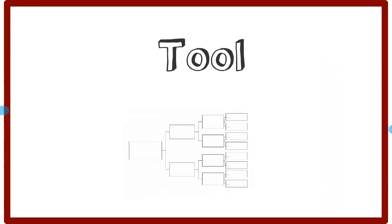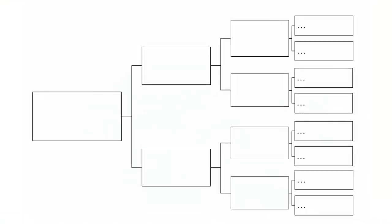This is what an Issue Tree looks like. Nothing fancy, just boxes on a page. But by being systematic, we can ensure that a problem is dissected properly.